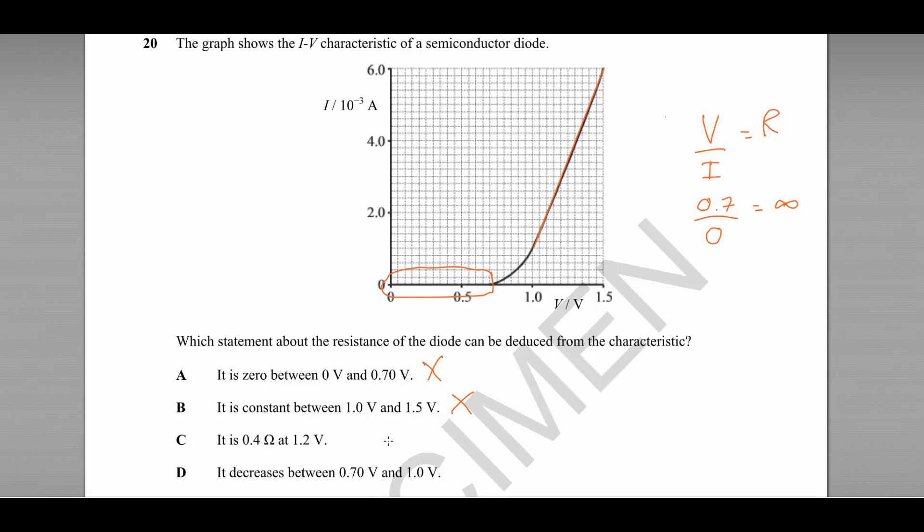Statement C says that the resistance is 0.4 ohms at 1.2 volts, and 1.2 volts is approximately here, and that gives us a current of 2.8 milliamps, 2.8 times 10 to the minus 3.